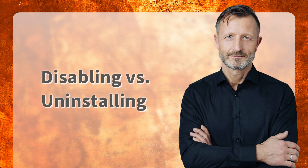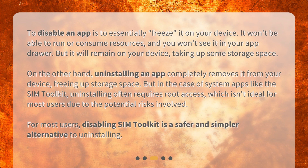To disable an app is to essentially freeze it on your device. It won't be able to run or consume resources, and you won't see it in your app drawer, but it will remain on your device, taking up some storage space. On the other hand, uninstalling an app completely removes it from your device, freeing up storage space. But in the case of system apps like SIM Toolkit, uninstalling often requires root access, which isn't ideal for most users due to the potential risks involved. For most users, disabling SIM Toolkit is a safer and simpler alternative to uninstalling.